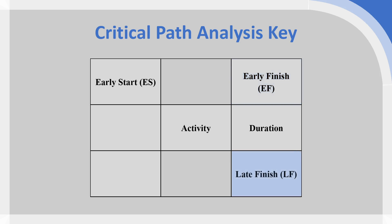On the bottom right we have the late finish, which is the latest the activity can finish without delaying the project as a whole — we'll discuss how we calculate this on a reverse pass. On the bottom left we have the late start, which is the latest the activity can start without delaying the project. In the middle-left square we have the slack, which is the number of days the activity can be delayed without causing an overall project delay.